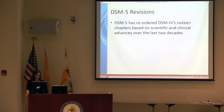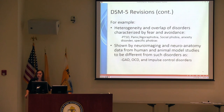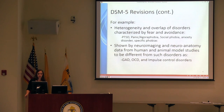Research demonstrated that clustering disorders according to internalizing and externalizing factors represents an empirically supported framework. Internalizing groups include anxiety, depression, and somatic disorders. Externalizing groups include impulsive, disruptive conduct, and substance use disorders. Studies show that disorders such as PTSD, panic, agoraphobia, social phobia, anxiety disorders, and specific phobias are more similar to each other than to disorders like generalized anxiety disorder, OCD, and impulse control disorder. More studies are being done for the next revision of the DSM, DSM-5.1.